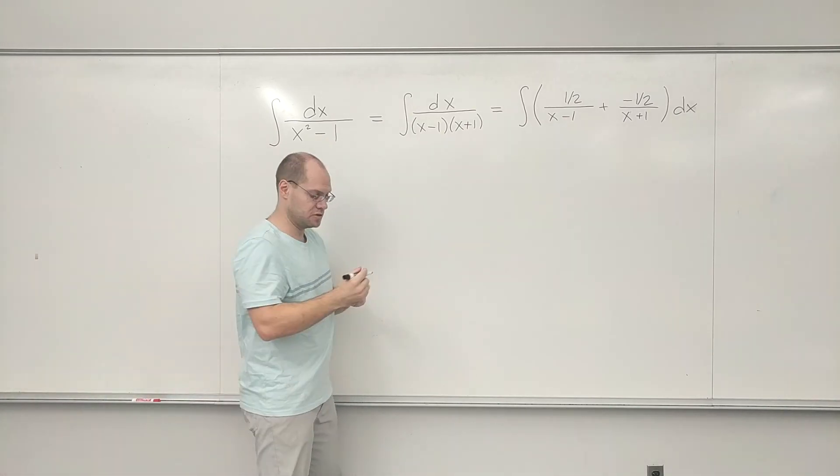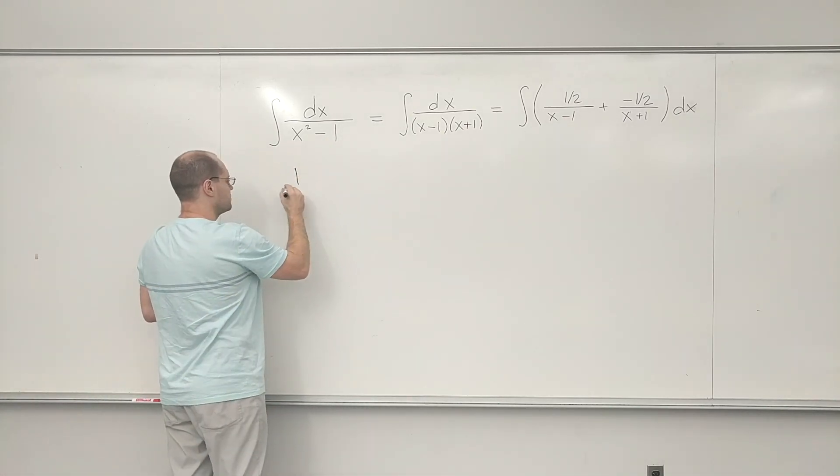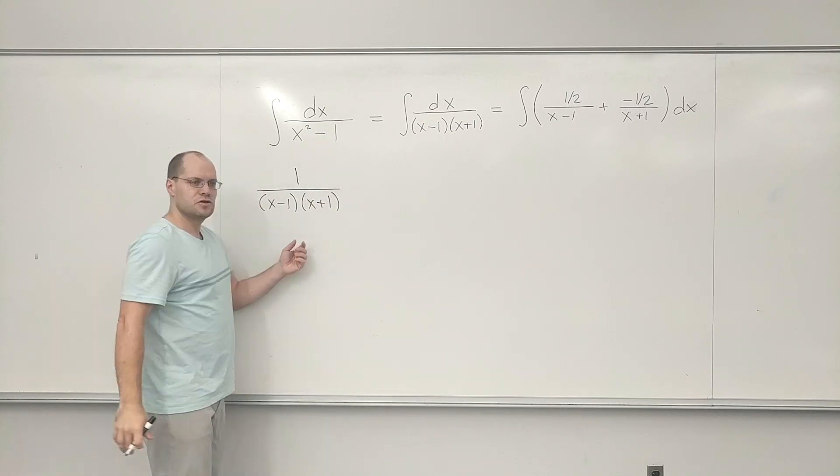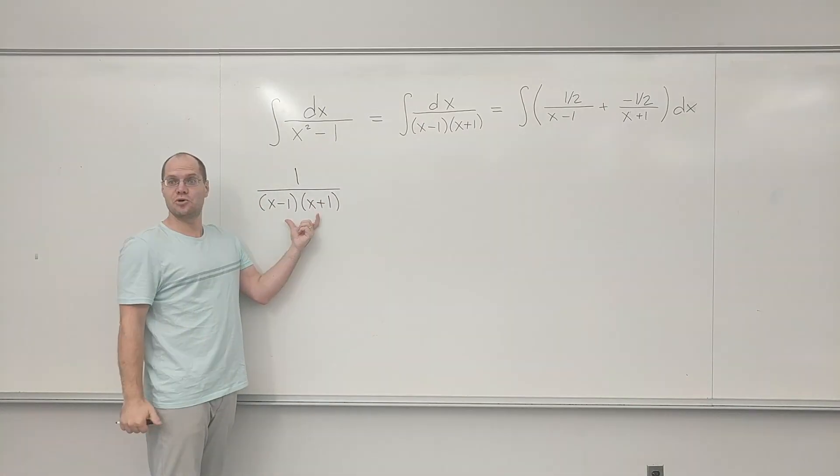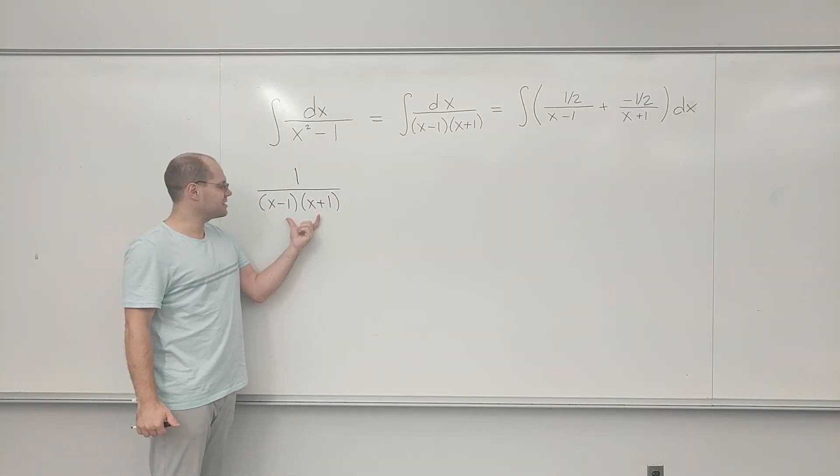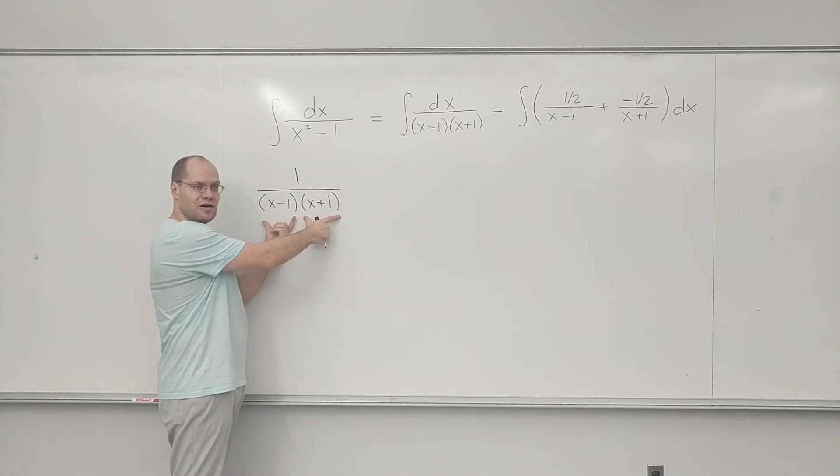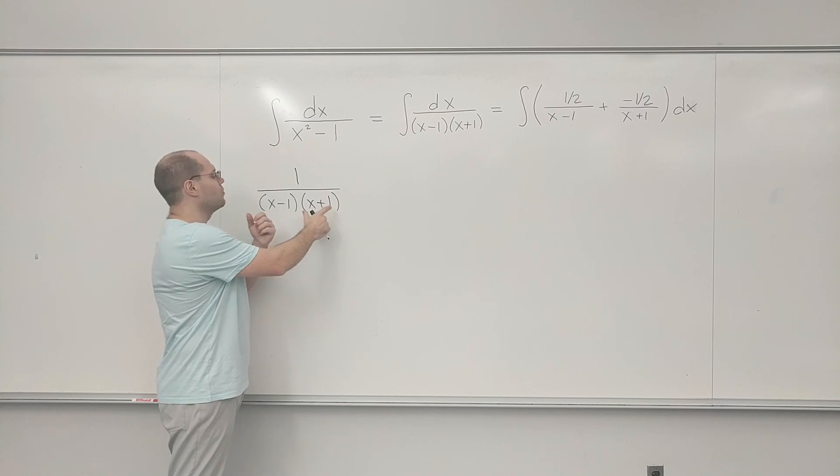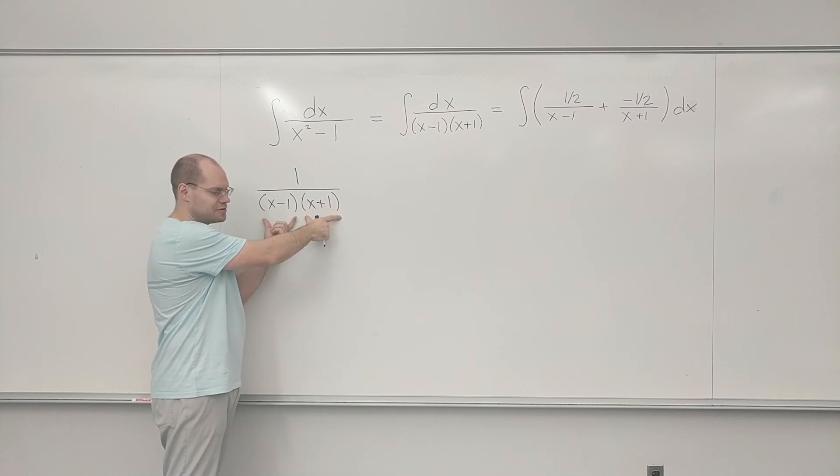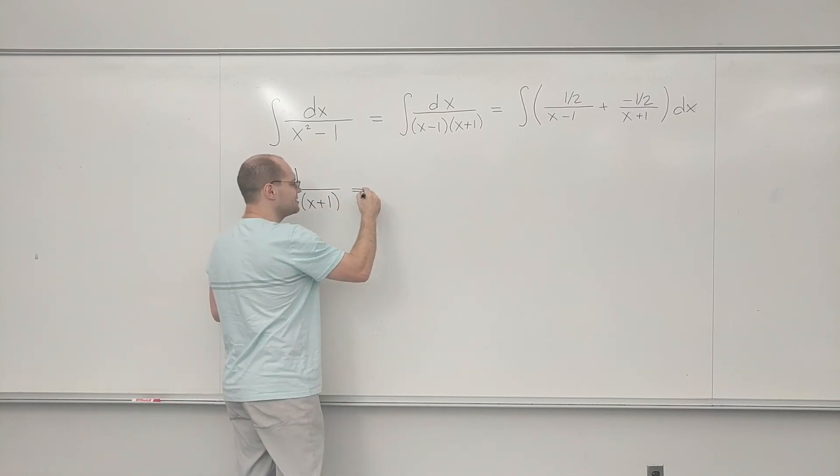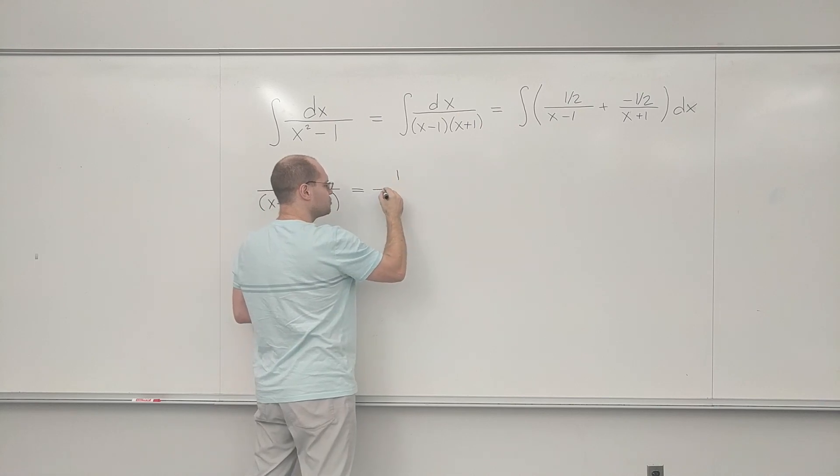Here's the complete procedure. We start off with this expression. Here, the fraction is quote-unquote combined. There's just one fraction, one denominator, and so forth. But whatever the factors are in the denominator, we can represent this single fraction as a sum of two fractions.